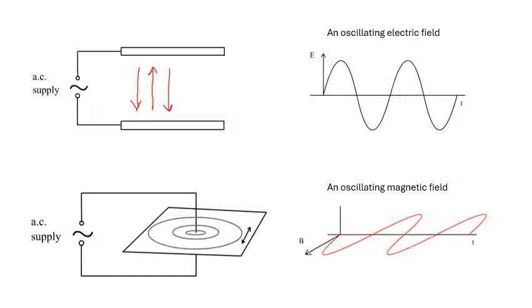Similarly, if you have a piece of wire with an AC supply, the current going backwards and forwards produces a magnetic field. Looking at this circular magnetic field, at any particular point the magnetic field will be going that way and then that way, alternating. If you plotted the field strength against time, it would look like an oscillating magnetic field.